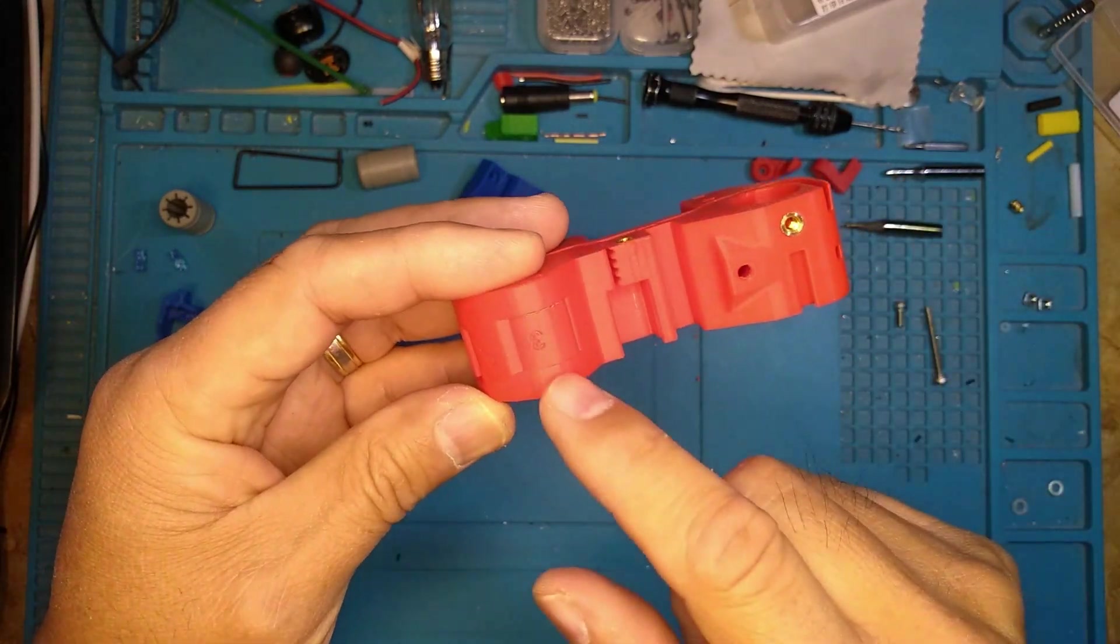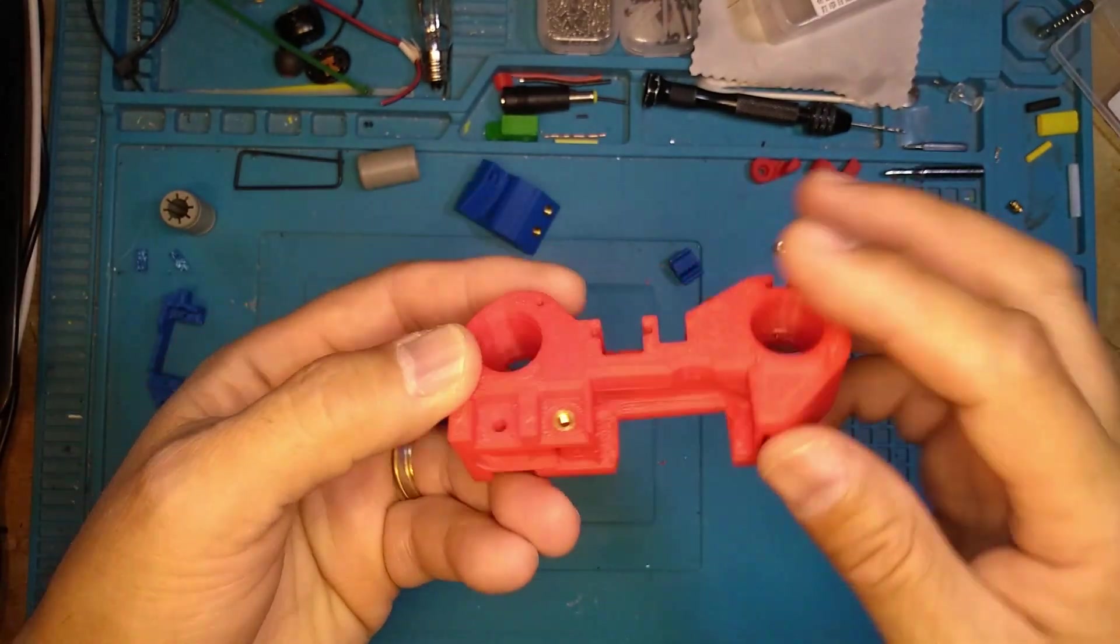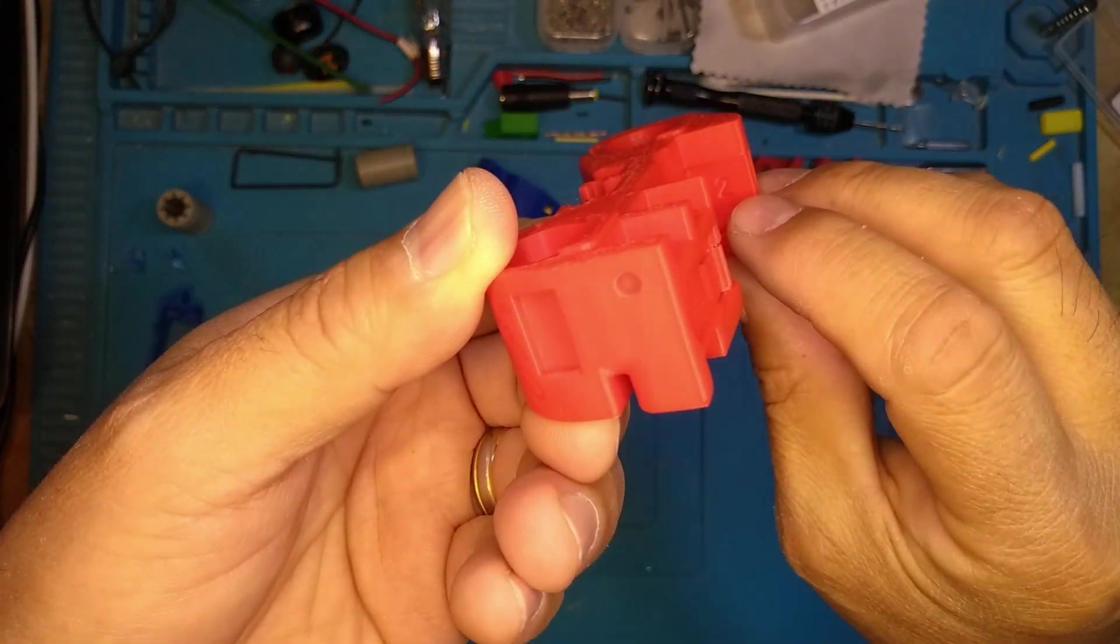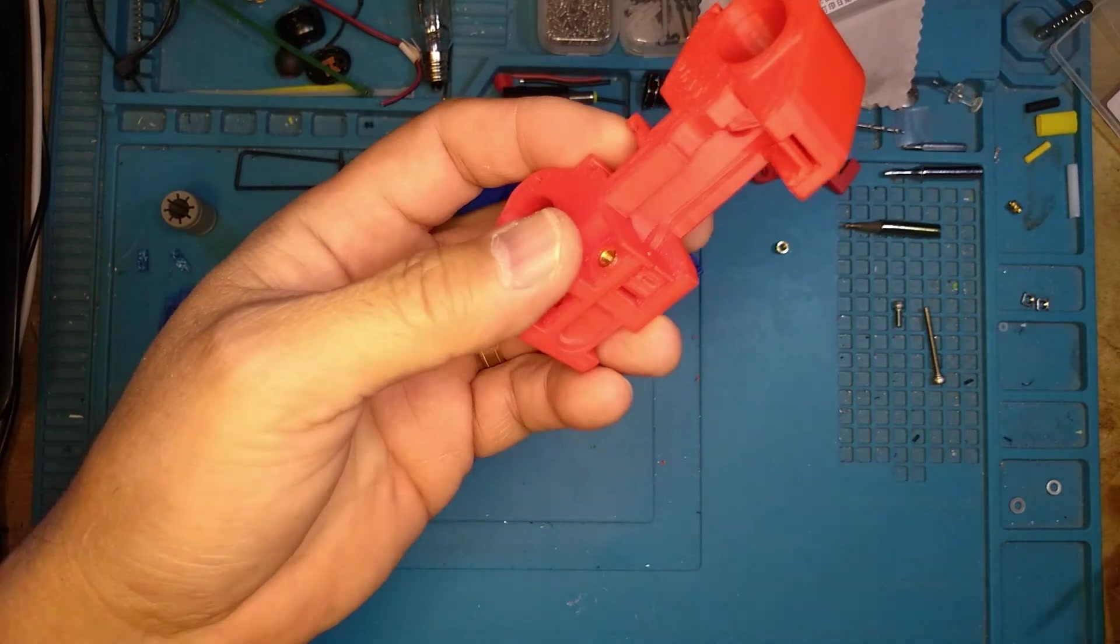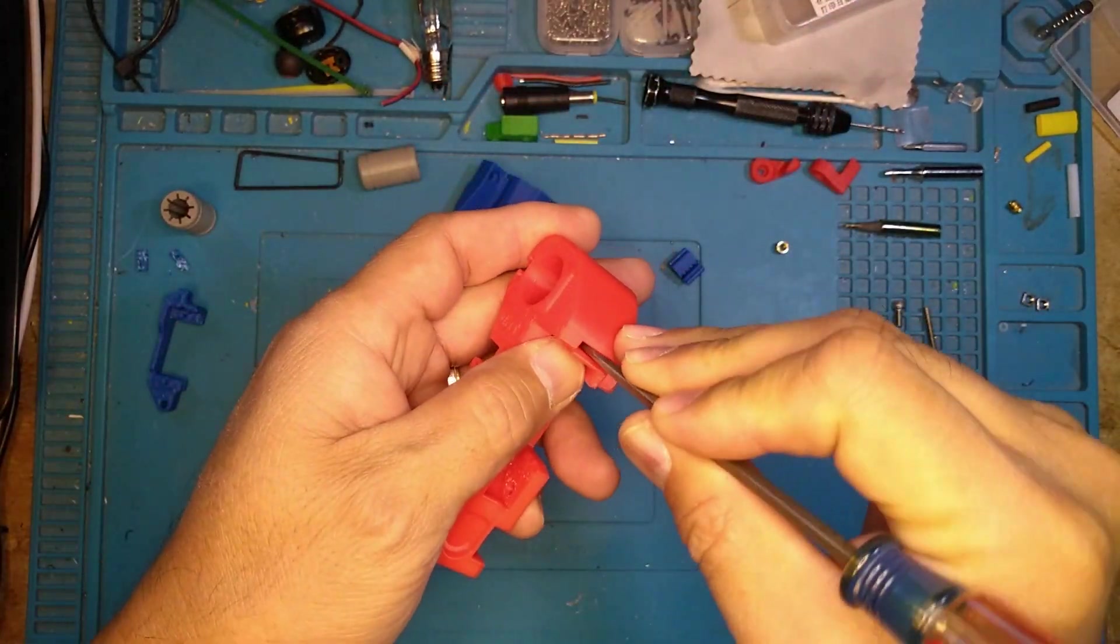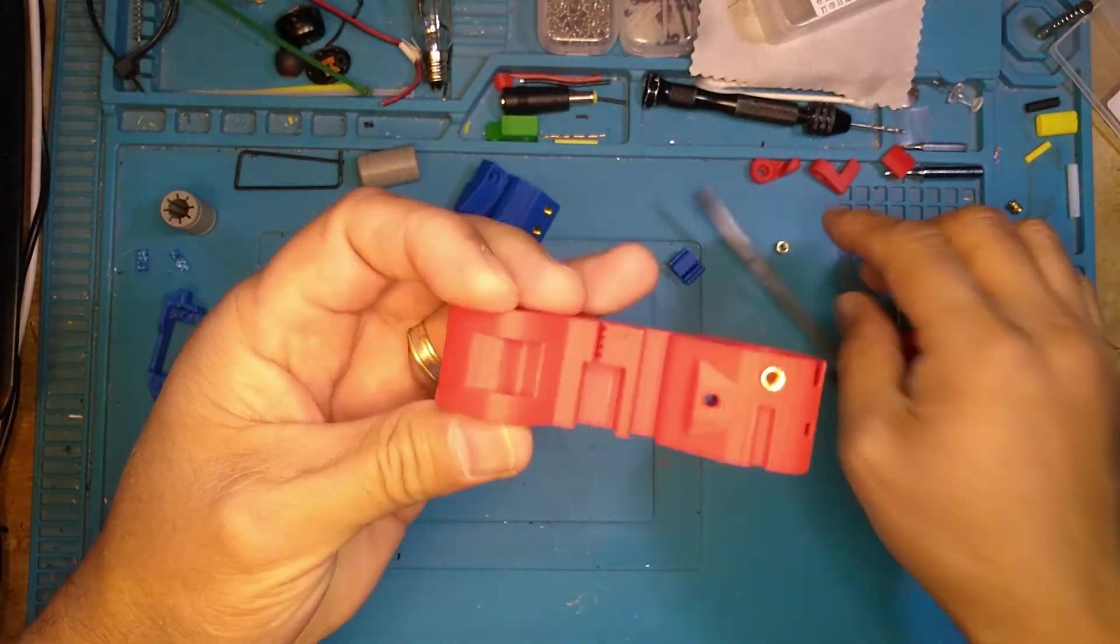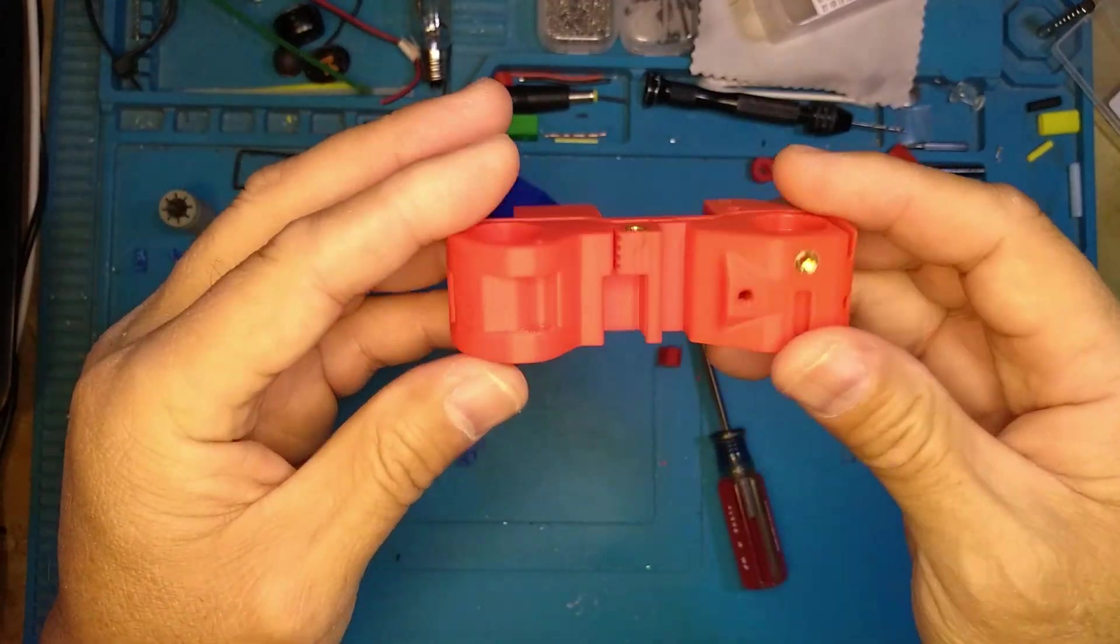Alright, so there are also three supports. They're labeled 3, 2, and 1. You're going to want to remove those. Alright, so you've got those supports removed.